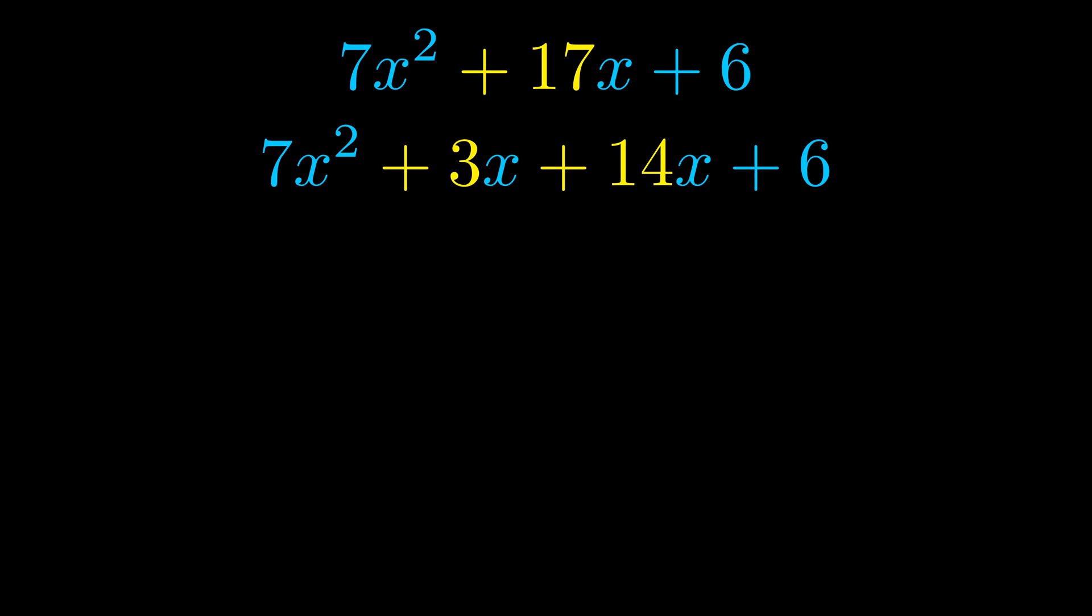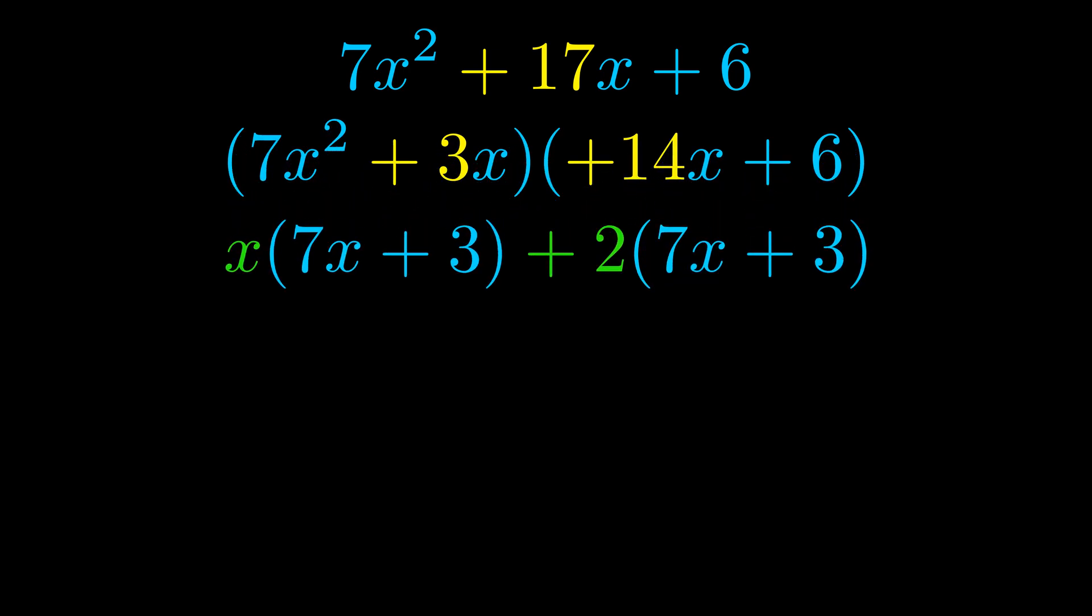Once we've done this we go ahead and we put parentheses around the first term and the last term. And we do that so that we can take the greatest common factor out of both terms. We can see the greatest common factor is now outside in green. Notice also how what remains inside of the parentheses is the same in both cases.